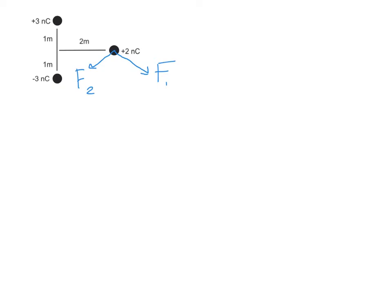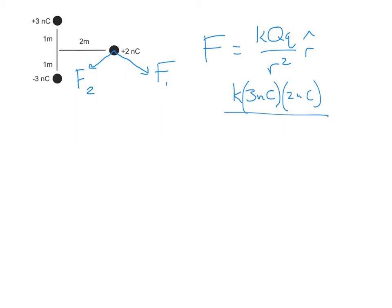If you recall from class, the force is going to be kqq over r squared r-hat, where the kqq over r squared part is the magnitude and the r-hat is the direction. The magnitude for F1 is going to be k times the three nano coulomb times the two nano coulomb, over the distance between them. That distance isn't directly given in the diagram, but since this distance is one meter and this distance is two meters, we can use the Pythagorean theorem and figure out that distance is the square root of five meters — and ditto for the other distance.